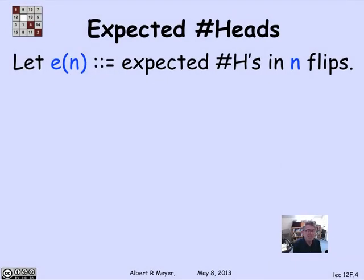Let's use this to get a nice, different, and simpler — a more elementary — way of calculating the expected number of heads in n flips. So let's let E(n) be the expected number of heads in n flips, just as shorthand, because the notation will be easier to work with than writing capital E brackets of H_n.